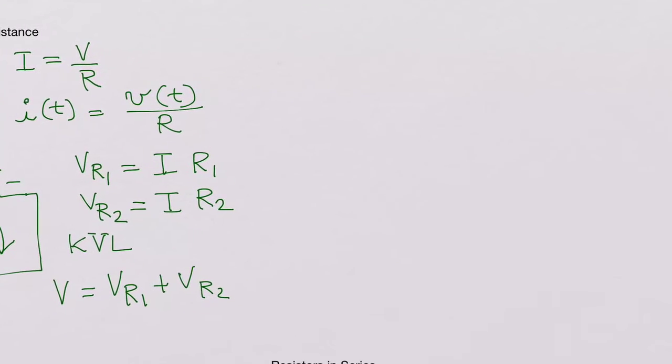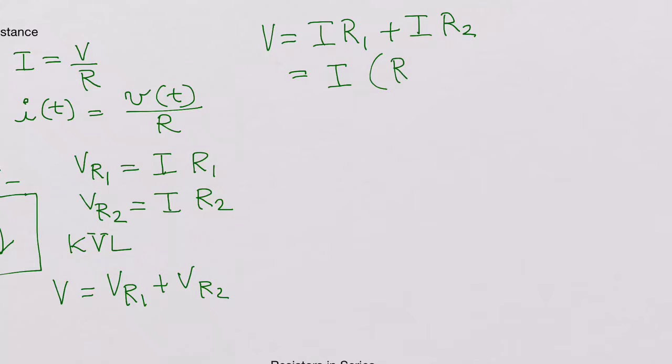So V is I times R1 plus I times R2. If you take I as common here, this is I times (R1 plus R2). This is the total voltage V.